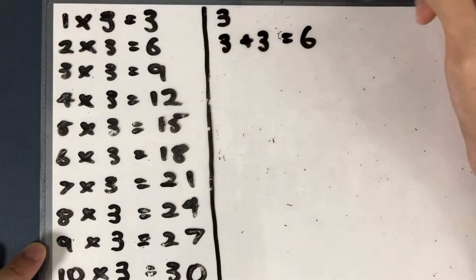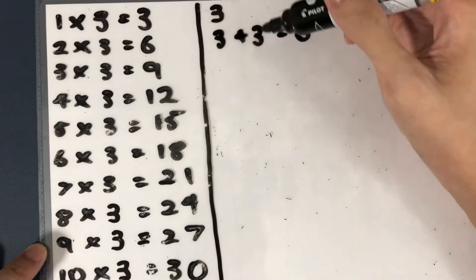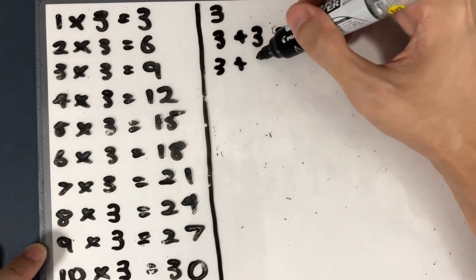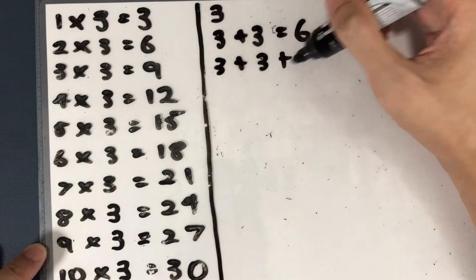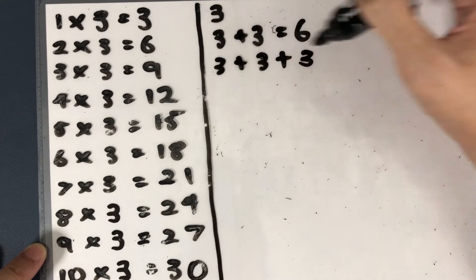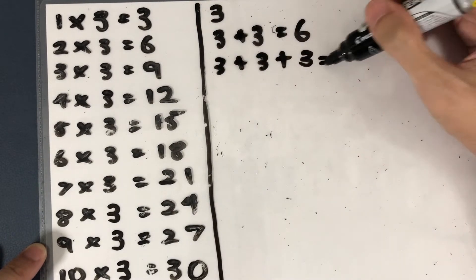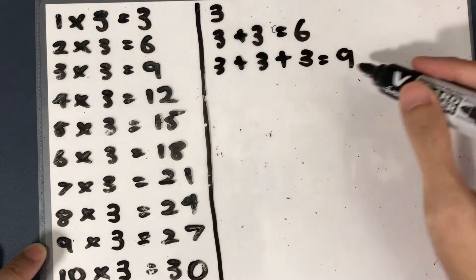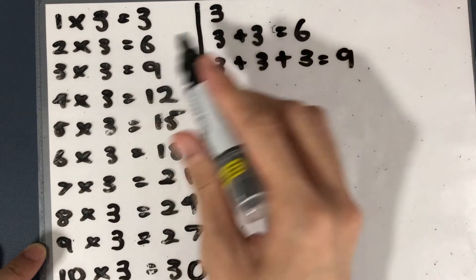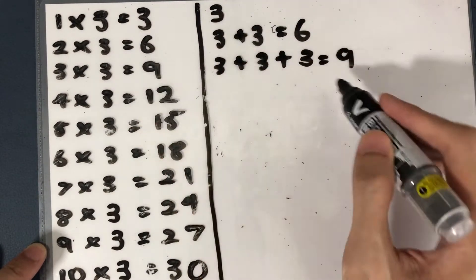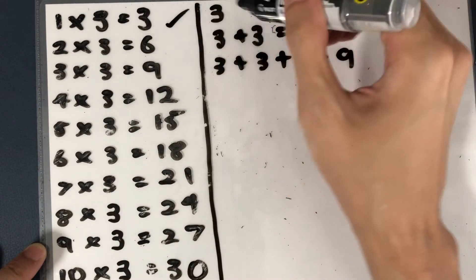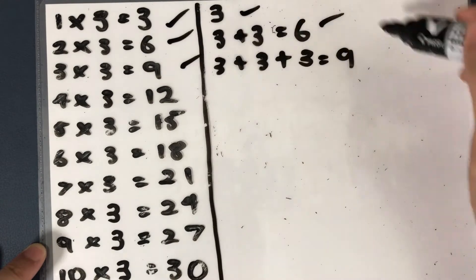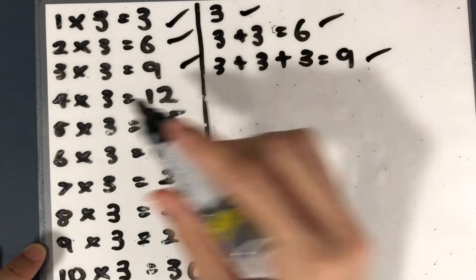3 threes, that is 3 plus 3 plus 3 — 3 times: 1, 2, 3 — and that will give you 9. Notice how the answers are actually the same.